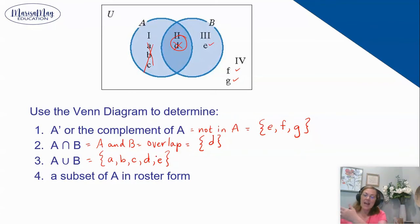Number four finally is a subset of A. So what this is asking you for is to take the things in A and just make a small circle around some of them. So maybe you would make a circle around A and B.